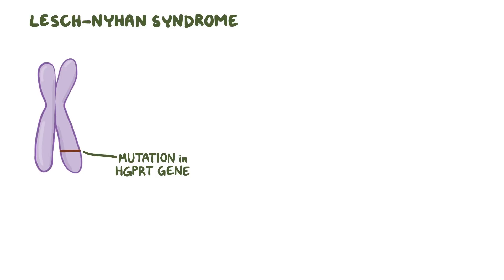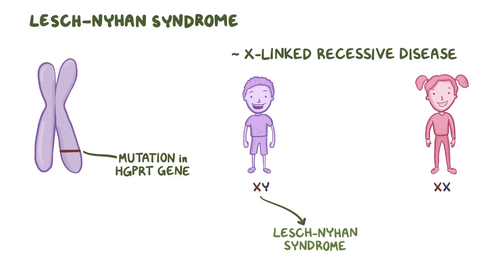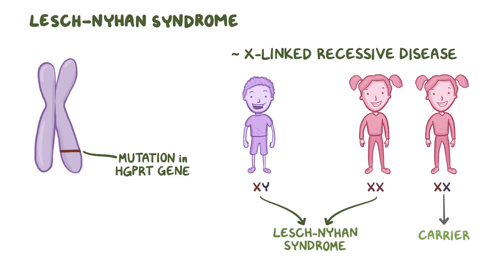In Lesch-Nyhan syndrome, there's a mutation in the HGPRT gene, which is on the X chromosome. So Lesch-Nyhan syndrome is an X-linked recessive condition, and it almost exclusively occurs in males, because if they get one mutation, they get the disease. In females, a single mutation makes them a carrier, and two mutations are needed to have the disease. Finally, the mutation sometimes arises sporadically, rather than being inherited from a parent.